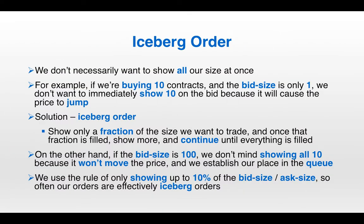Our execution algorithm doesn't only consist of pegged limit orders — let's introduce the iceberg order. The idea is that we don't want to show all our size at once. For example, if we're trying to buy 10 contracts but the bid size is only one, we don't want to immediately show all 10 on the bid because it could cause the price to jump — sellers will see the large bid, remove their asks, and the price will rise before we get filled. With an iceberg order, you show only a fraction of the size you want to trade; once that fraction is filled, you show more, continuing until everything is filled. The downside is that every time you resubmit, you're placed at the end of the queue, so ideally you'd submit your entire size right away to establish your queue position. However, if the bid size is large enough — say 100 — we'll show all 10 contracts since it won't move the price, and we do establish our place in the queue.